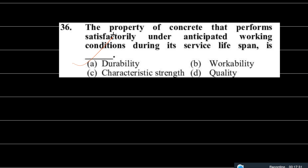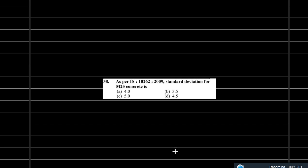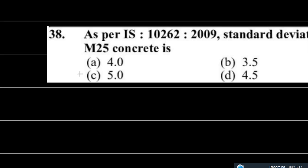The next question: as per IS-456-2000, the specific characteristic compressive cube strength of M70 concrete is 70 N/mm² after 28 days. Option C is correct. The following question: as per IS-10262-2009, the standard deviation for M25 concrete — M25 has a standard deviation value; option A is correct.